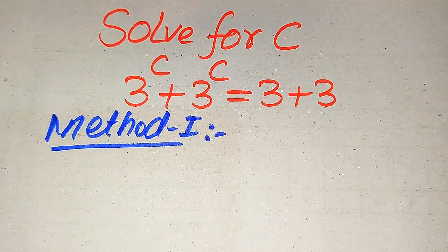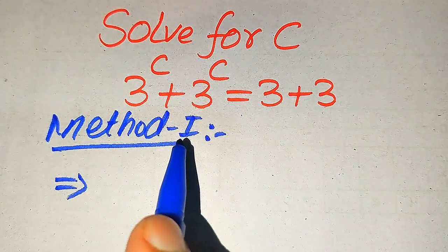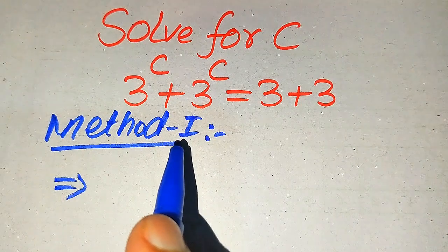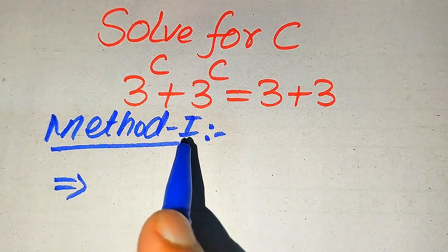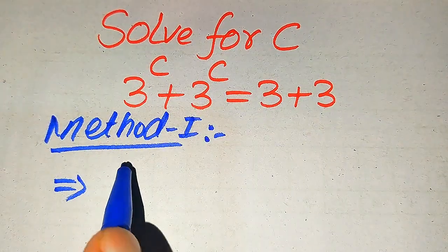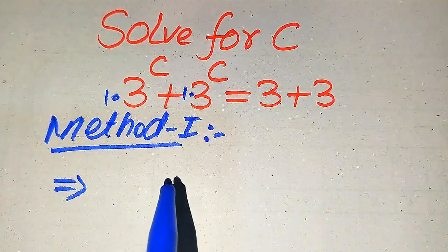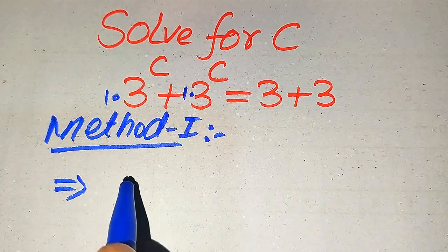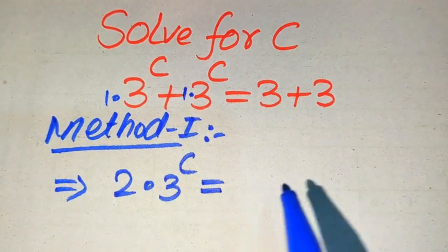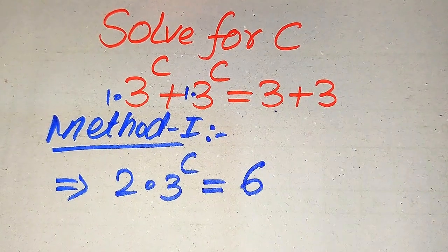Now we move towards our first method. You see here on the left hand side we have two exponential functions added by each other. When the same variable terms are added, we need to add the coefficients of these terms. The coefficient of each term is 1, so when you add these two coefficients it will be written as 2 times 3 to the power of C equals 3 plus 3, which becomes 6.